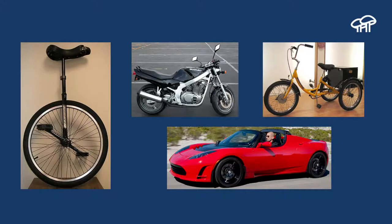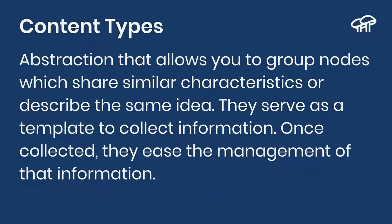We saw an example of describing a car and an event, but let's talk about vehicles in general. You can have motorcycles, three-wheeled cycles, and four-wheeled vehicles. Between a motorcycle and a car there are significant differences — a motorcycle cannot go in reverse and doesn't have windows. When we store information in Drupal, we need a way to differentiate between these different elements. We do that in Drupal using content types. A content type is an abstraction that allows you to group nodes that share similar characteristics or describe the same idea. The content type is going to be your template for collecting information.